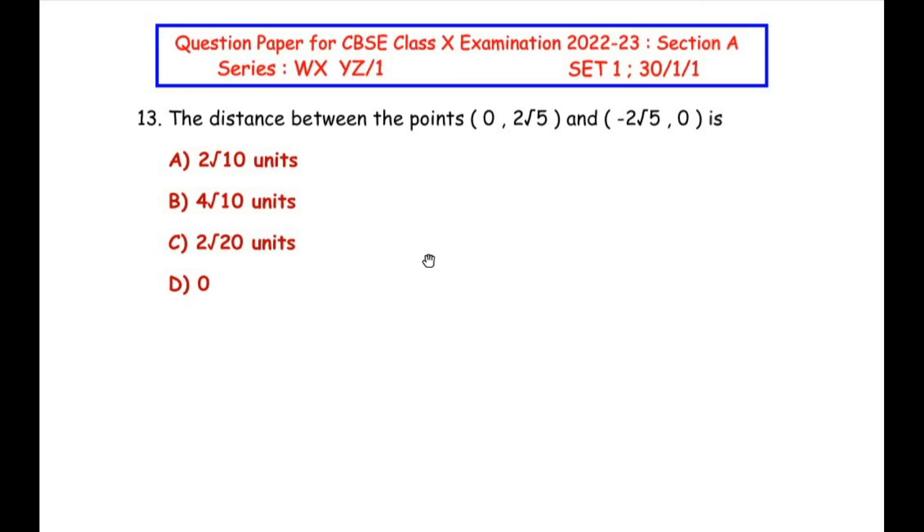Now this question is from the coordinate geometry chapter. The distance between the points (0, 2√5) and (-2√5, 0) is: